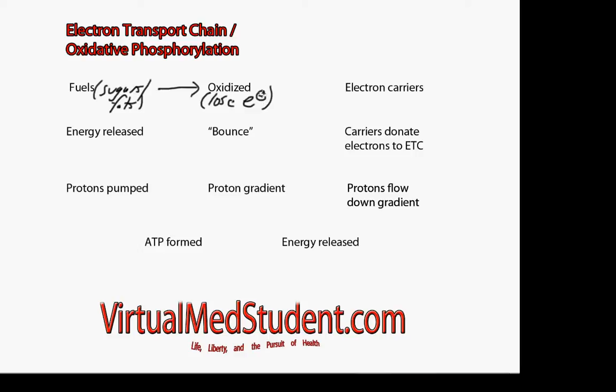Those electrons get tagged onto electron carrier molecules, specifically molecules known as FADH and NADH. These electron carriers take the energy of the electrons gained from the sugars and fats that we burn, and they diffuse to the electron transport chain in the mitochondria.